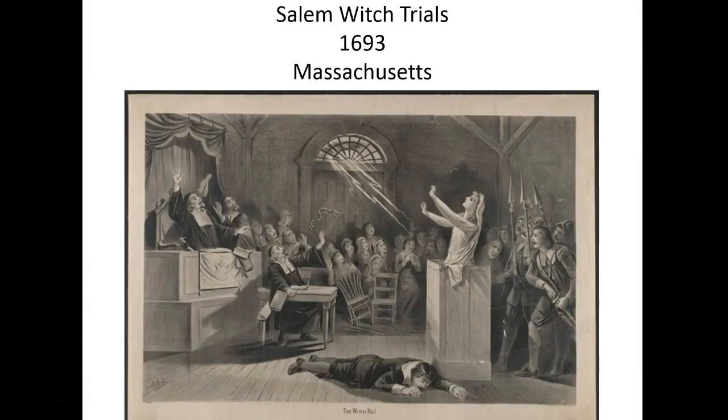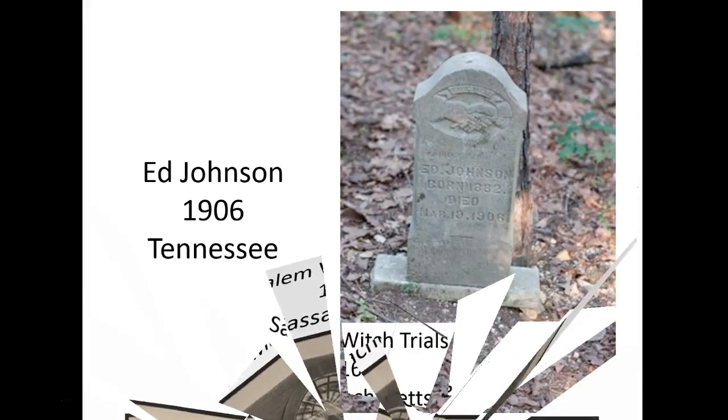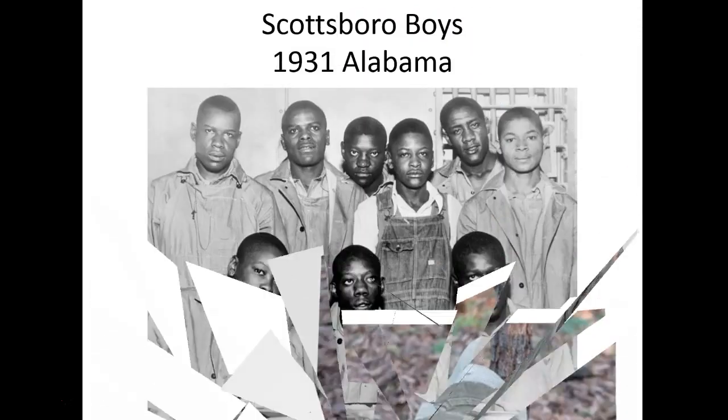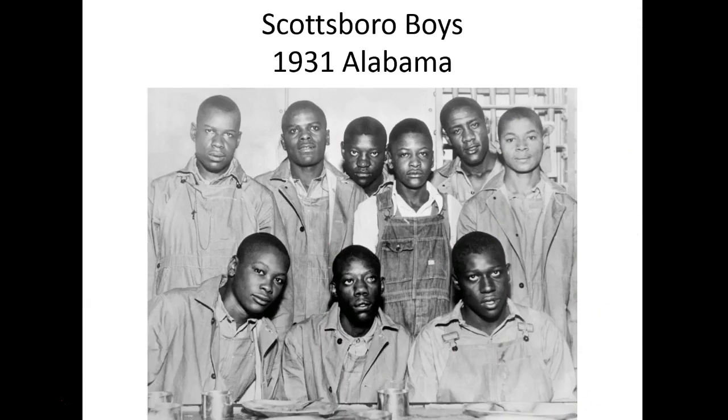So some famous cases of Type I errors would be the Salem Witch Trials, Ed Johnson who was sentenced to death for the rape of a white woman. He was a black man in Tennessee in 1906 when he was innocent. One of the most famous cases is the Scottsboro Boys Case in 1931 in Alabama where 8 of these 9 boys were sentenced to death again for the rape of 2 white women when they were in fact innocent.